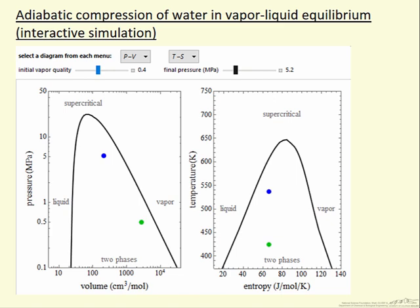Now as we do the adiabatic compression, we're doing work on the system. There's no heat transfer, so the energy increases. And this results in a temperature increase, and of course we have to have a temperature increase to stay in vapor-liquid equilibrium as we increase the pressure.